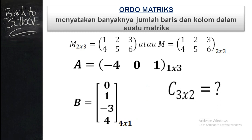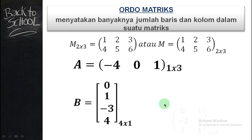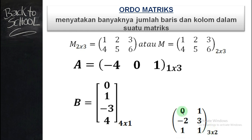Kalau Anda sudah paham tentang ordo matriks, perhatikan bagaimana menuliskan matriks C dengan ordo 3 kali 2. Untuk barisnya ada 3 baris, untuk kolomnya ada 2 kolom. Anda coba kerjakan. Perhatikan contohnya: baris 1 ada 0, 1, min 2, 3; baris kedua min 2, 3; baris 3 ada 1. Ada 3 baris. Untuk kolomnya: 0, min 2, 1 dan 1, 3, 1 — ada 2 kolom. Jadi contohnya untuk C ordo 3×2 seperti ini. Ini yang disebut dengan ordo matriks — banyaknya baris dan kolom dalam suatu matriks.